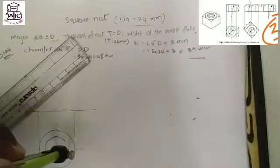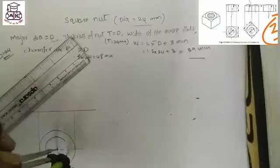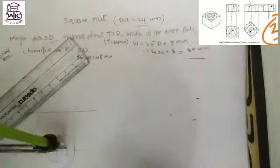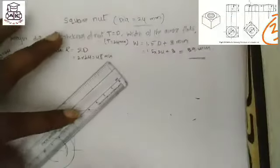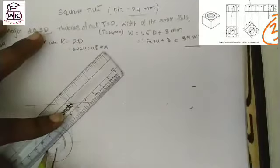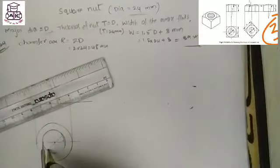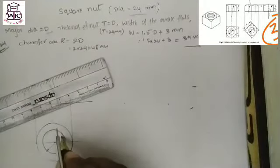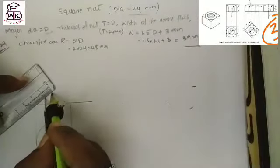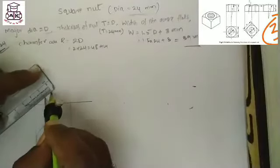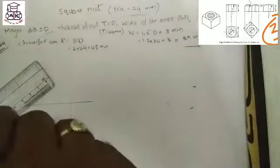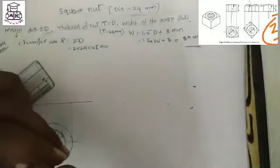Draw this circle as three-quarters, that means 75 percent. The representation of this three-quarter circle is internal threading. Draw one circle inside another circle.